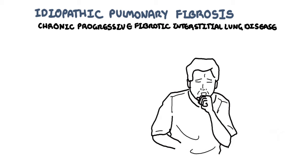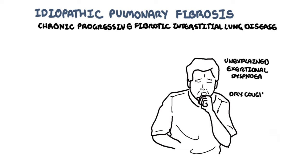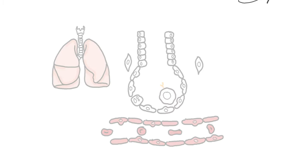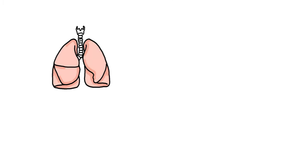Doctors suspect interstitial lung disease when an adult presents with unexplained exertional dyspnea, chronic dry cough, or velcro-like inspiratory crackles on examination, and more specifically fibrosis of the lung bases. The dyspnea is typically progressive over months to years. A differential diagnosis is heart failure and chronic obstructive pulmonary disease (COPD), which patients are often misdiagnosed as.